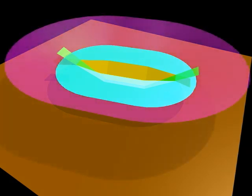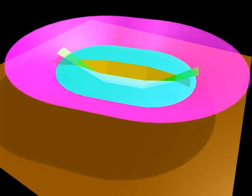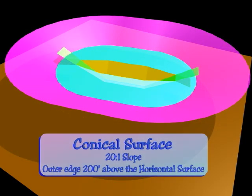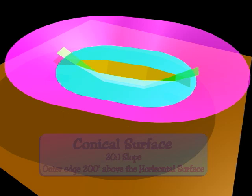The fifth surface is the conical surface. The conical surface starts at the edge of the horizontal surface, and extends outward and upward at a standard 20 to 1 slope, for a horizontal distance of 4,000 feet, and a vertical rise of 200 feet. This puts the outer edge of the conical surface at 350 feet above the airport elevation.